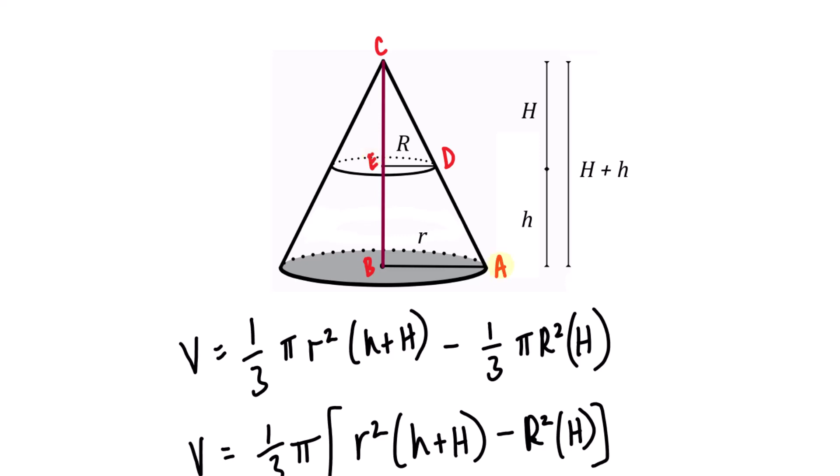From here, we say that line AB is proportional to line DE. We'll represent that as r is proportional to uppercase R. And similarly, the height from B to C, which is represented as H plus lowercase h, that too is proportional to the height that is represented from E to C, which we called uppercase H. That being said, we can set these two ratios equal to one another.